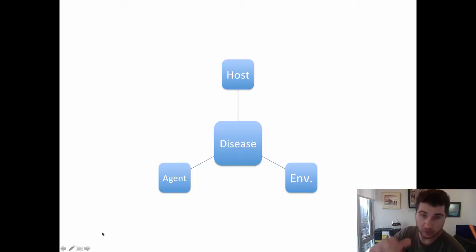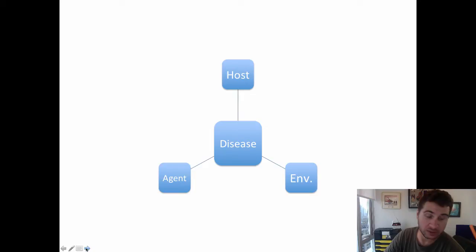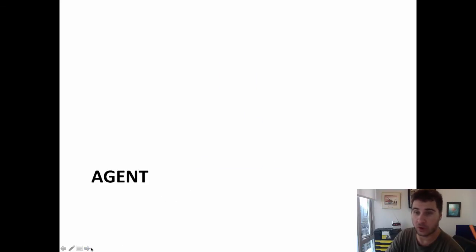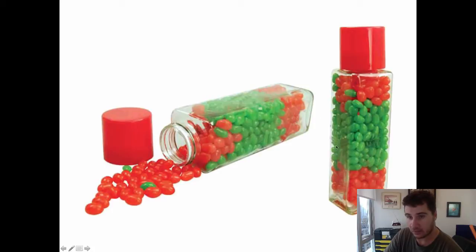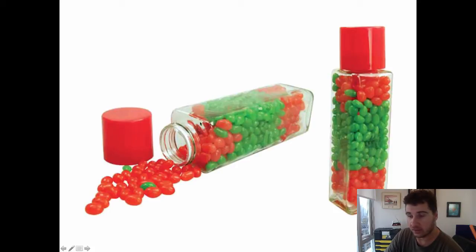I'll put the link down on the story they talk about. When it comes to the Agent, the most important concept is what we call the reservoir — meaning that the disease has to be present for it to be transmitted. Basically, the disease, like the red and green jelly bean here, has to be present to spill into the environment. If you don't have the reservoir, you cannot have the disease.